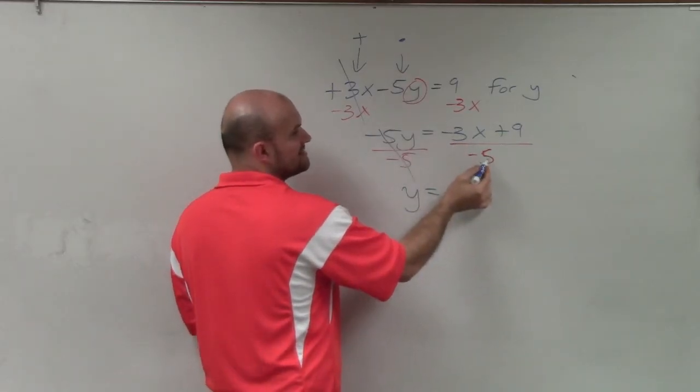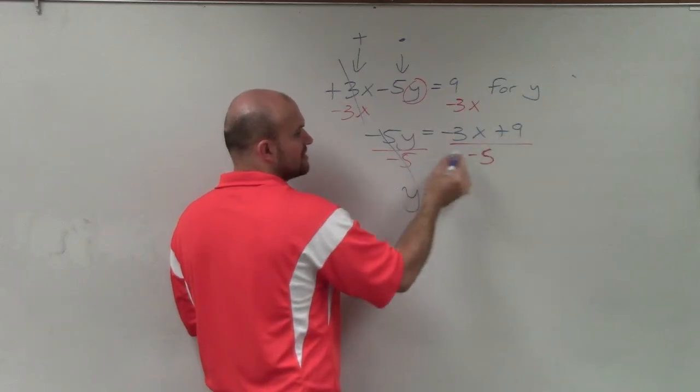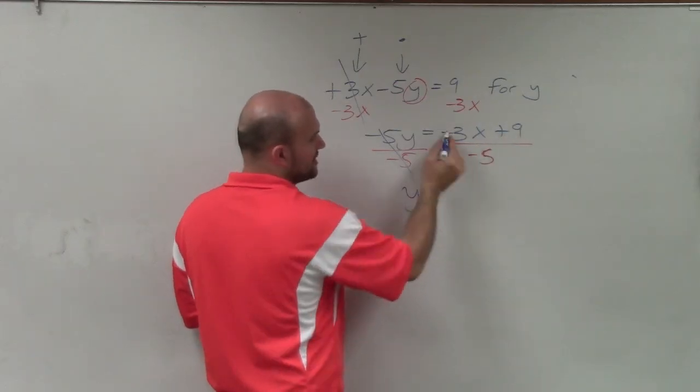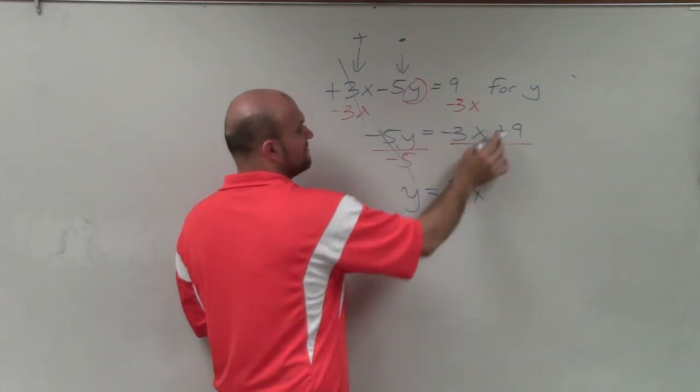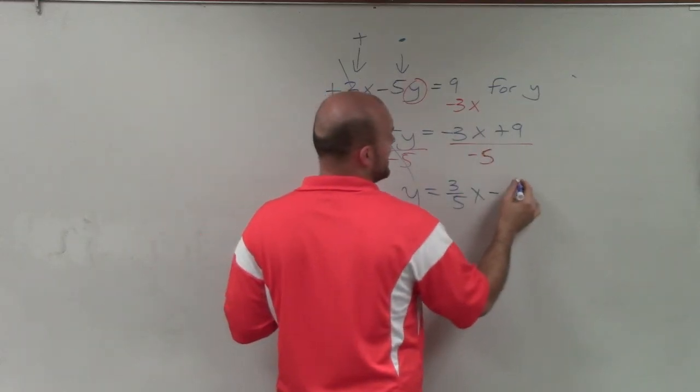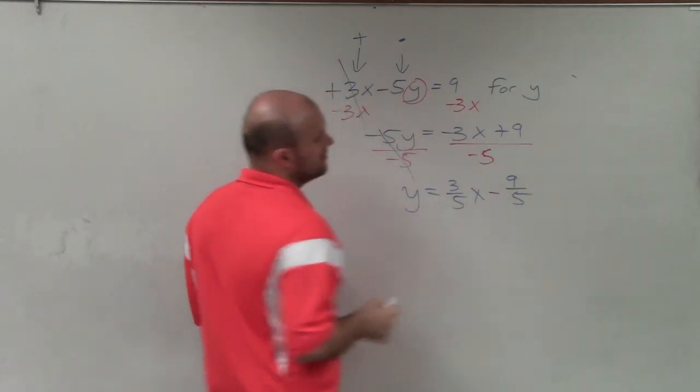Well, now I'm going to have to divide this negative 5 into both of these terms. Unfortunately, I can't reduce it. But a negative divided by negative now turns to a positive 3 fifths x, and negative 5 divides into 9 is a negative 9 fifths.